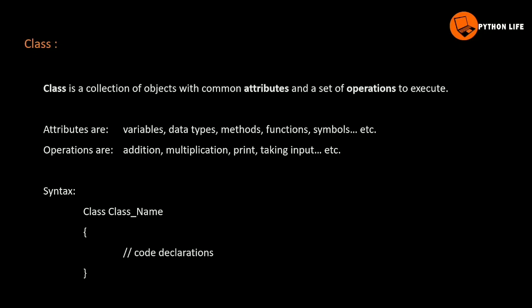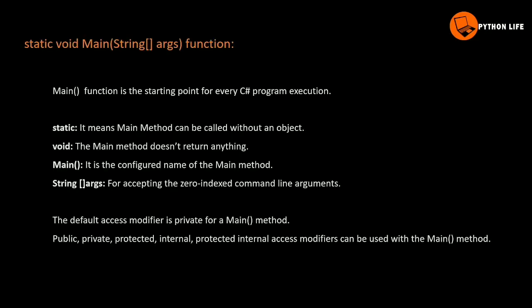For example, the values of the variables like addition, multiplication, subtraction, and printing can be used as a user. This class is the collection of objects. The syntax is the class name. The namespace is open and close — open is the starting point, close is the end point. This is the code. Static void means string args function. This is the main function. This is the C# program. This is the starting point.